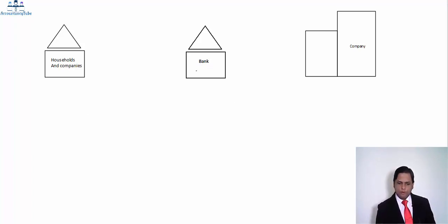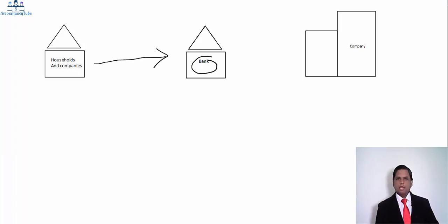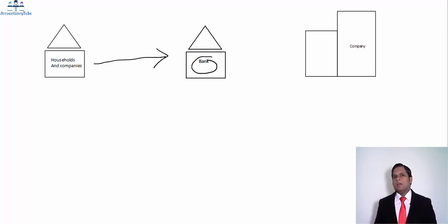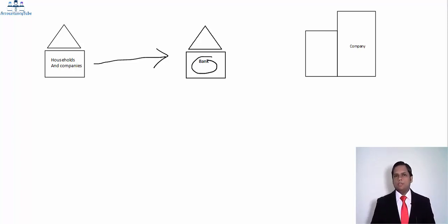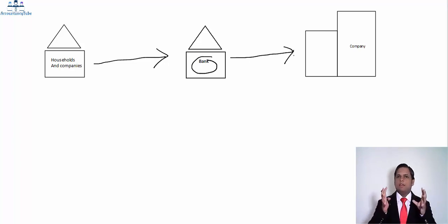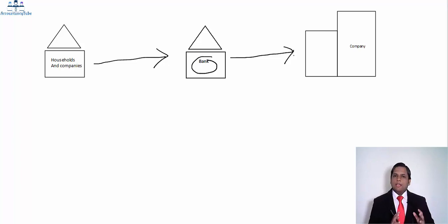This is best understood with a chart. The most simple form of financial intermediary is a bank, which we have in the center. What a bank does is take funds from households and companies. Households — people like you and me — save money from our salary and deposit it in a bank to earn a nominal interest. Companies also do the same; when they have surplus funds they put it in term deposits. The bank then pools those funds together into a large fund and gives it to companies in dire need.